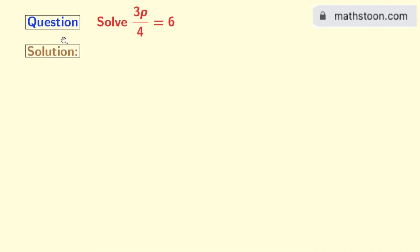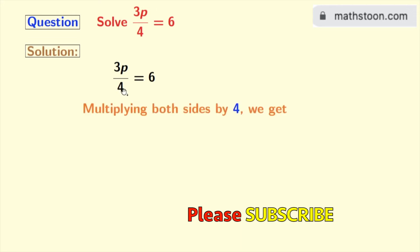Now let's start. This is our given equation. Look that in the left hand side we have the denominator 4. That's why we will multiply both sides by 4.